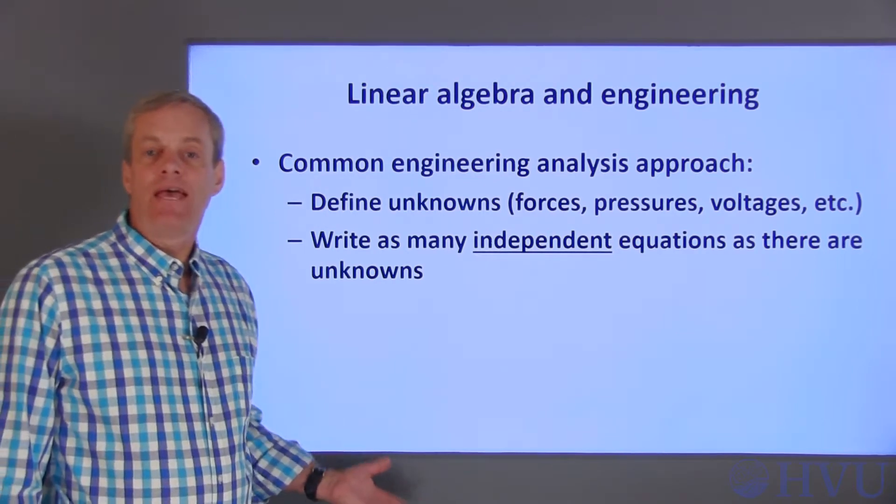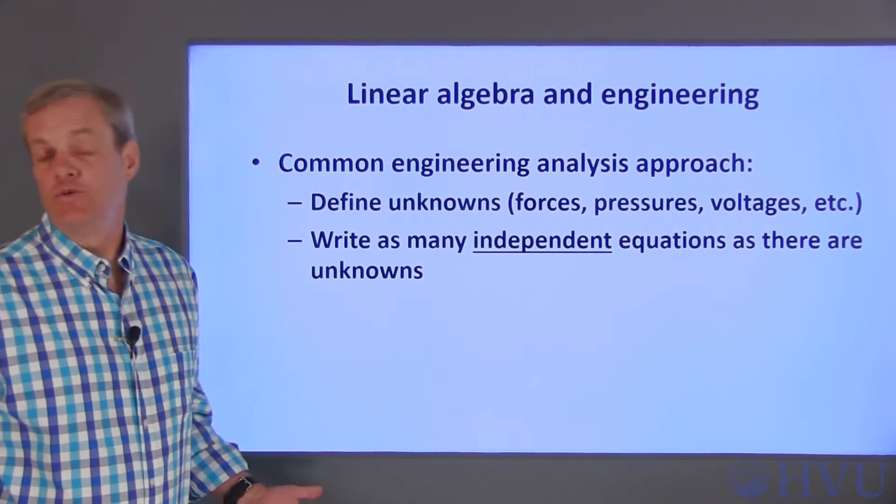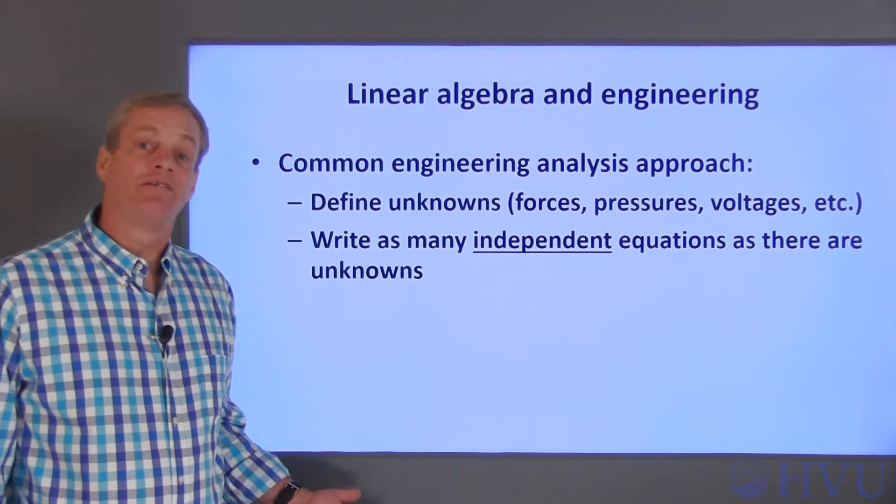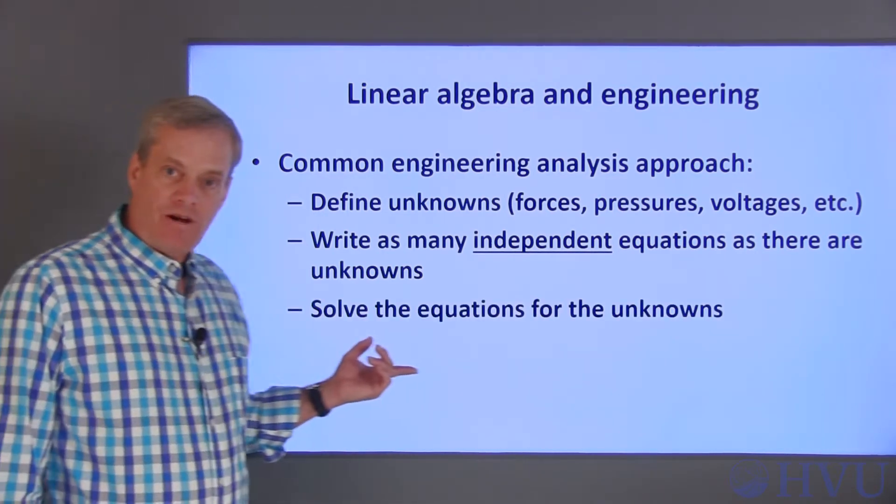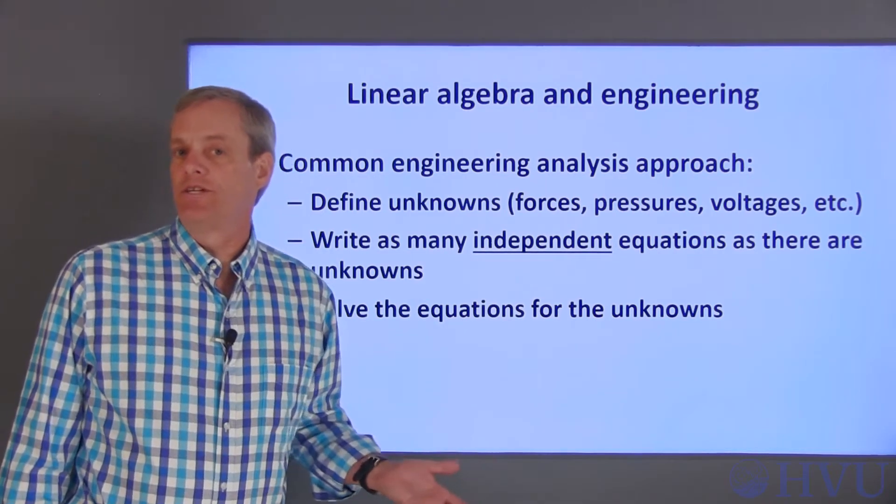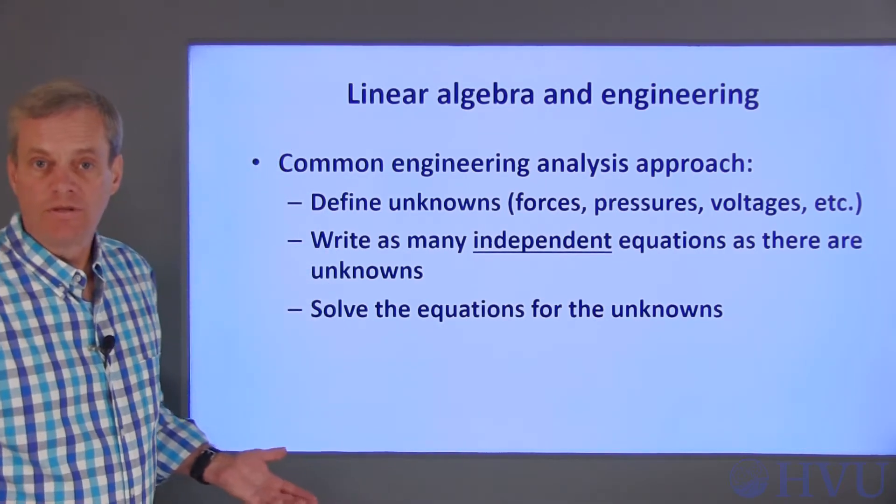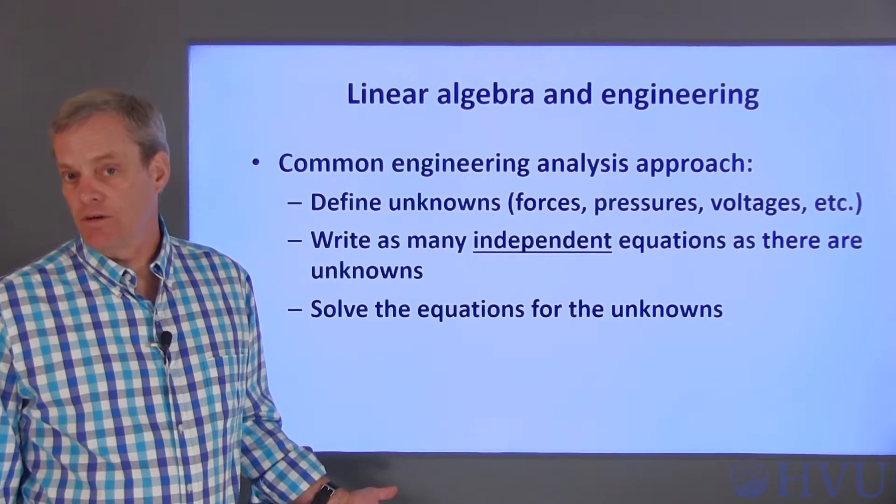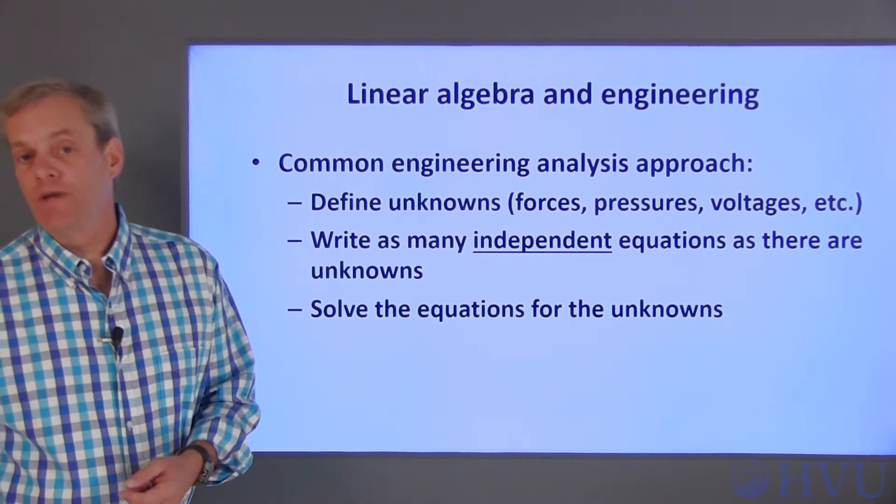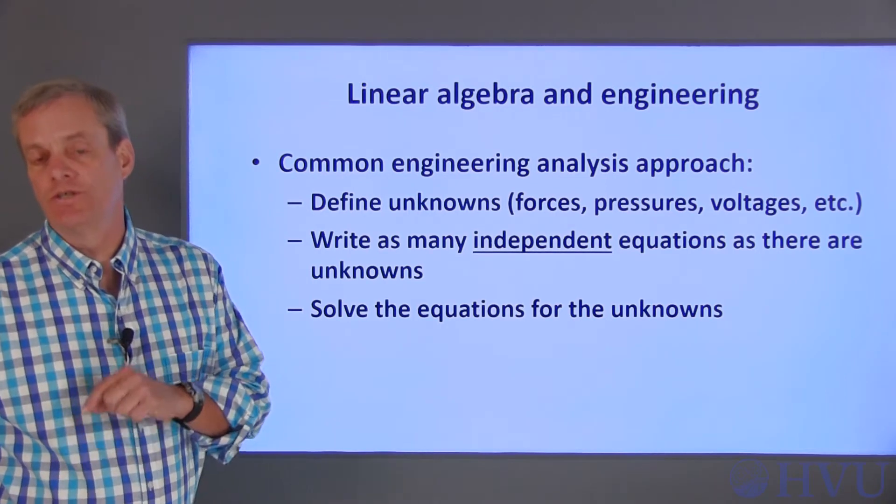If these equations are independent, then they'll have what is called a unique solution, which means that there is only one solution. Once you have equations describing the system, you can solve the equations to determine values for the unknowns. If you've done your job correctly, solving for the unknowns in the governing equation will provide the information necessary to solve your original engineering problem.